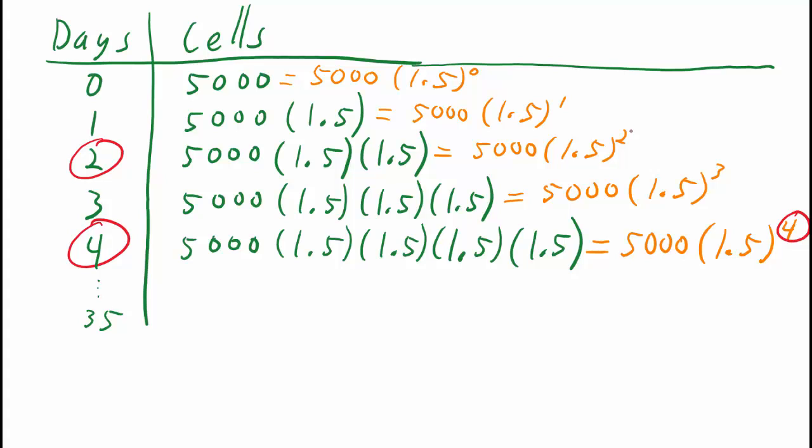After two days, the exponent was 2. So after 35 days, we'll have an exponent of 35. And we can use our calculator to figure that out.